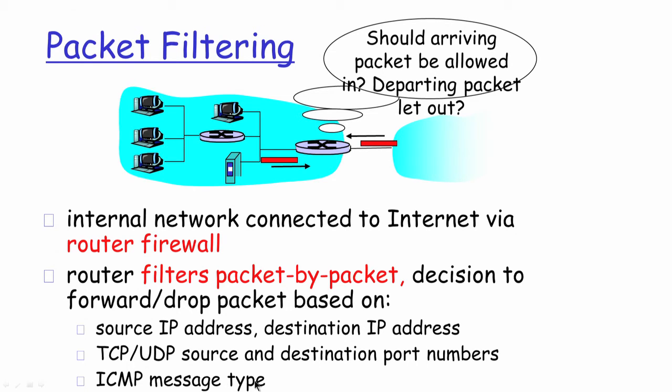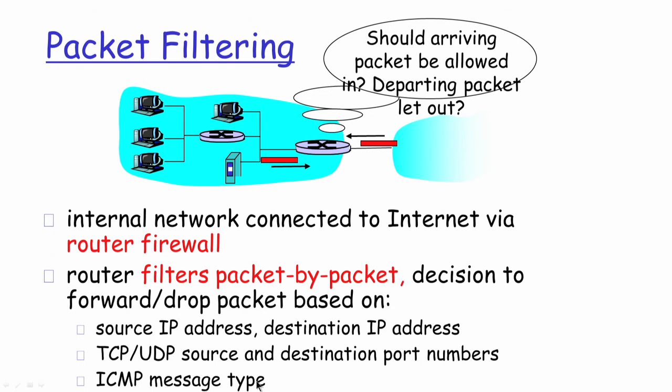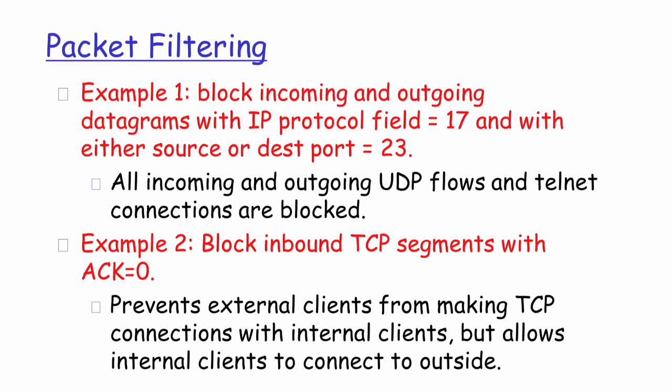For example, the traceroute application uses ICMP messages, and for security reasons there may be firewall configurations that disable these ICMP messages from going outside the network or being responded to. Based on these parameters, a filtering mechanism can be set on the firewall to either allow or deny on a per-packet basis — which is why this type of firewall is called a packet filtering firewall.